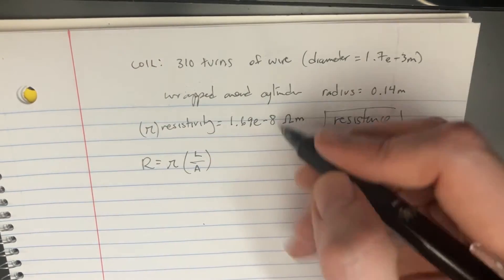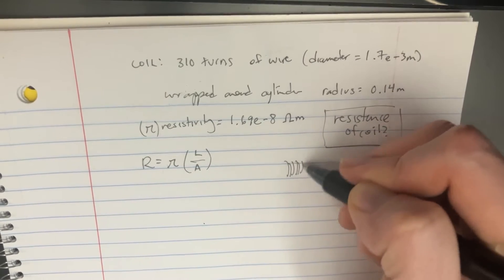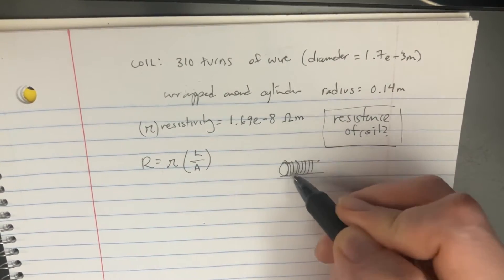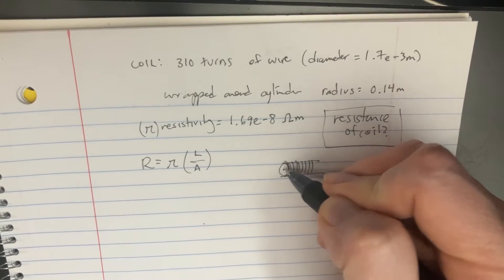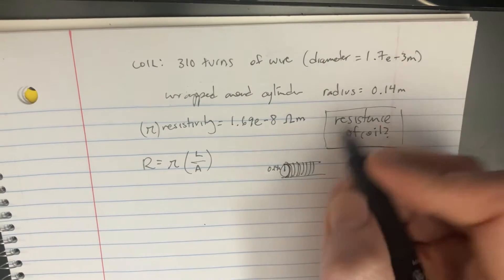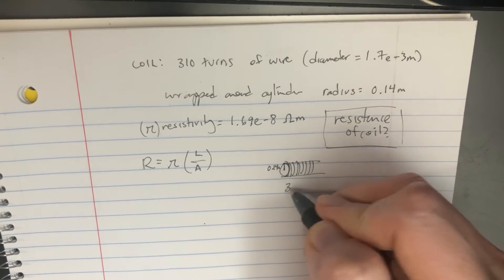And we're also going to be looking at what this coil looks like. So we're going to wrap it 310 times around this cylinder. And the cylinder has a radius here of 0.14 meters.